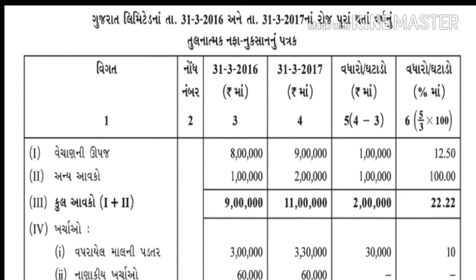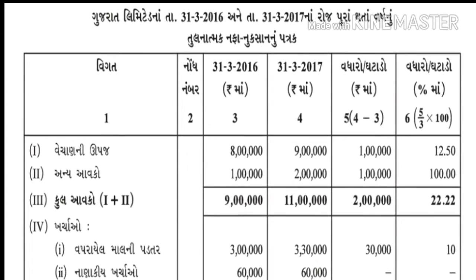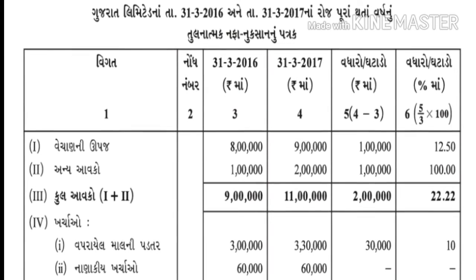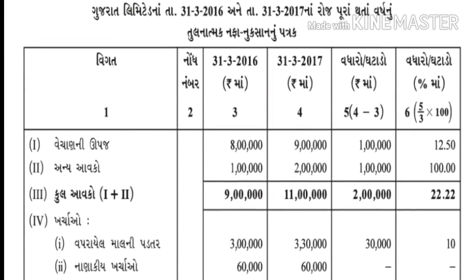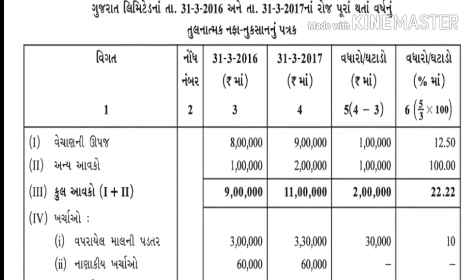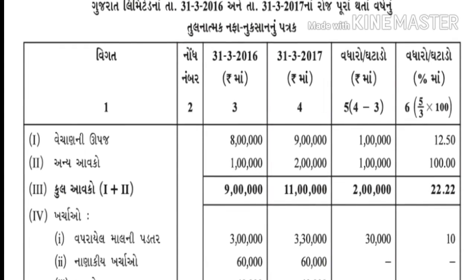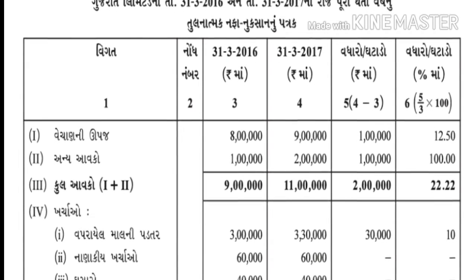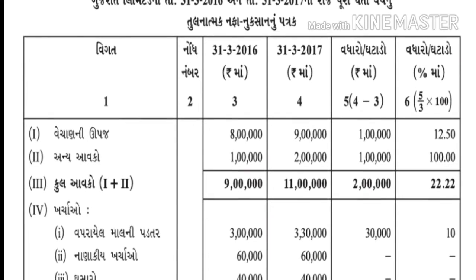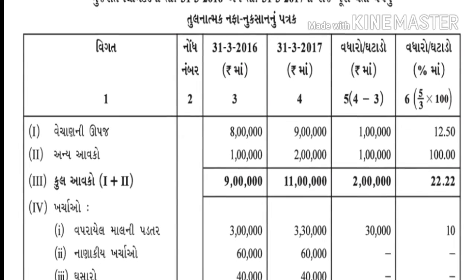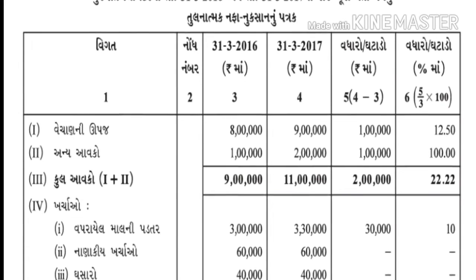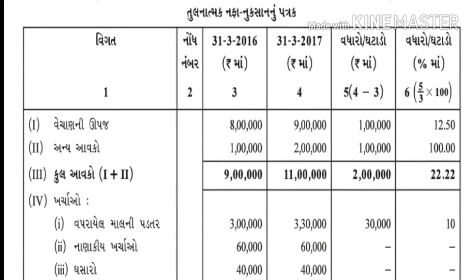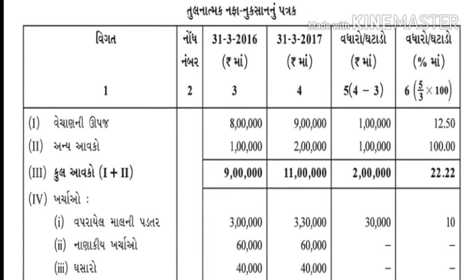31/3/2017ની રકમ - ખાનામાં આપણને 2017ના આંકડા આપેલા છે અને 2016ના આંકડા આપેલા છે. અને અહીંયા આપણે 2016ના આંકડા લખવાના, બીજી બાજુ શોધવાના. તો આ રીતે છ ખાનાં તૈયાર કરી.